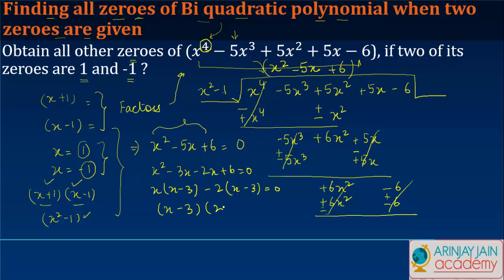(x - 3)(x - 2) = 0. Or in other words, the value of x could be 3 or 2. So the other zeros for this polynomial are 3 and 2.